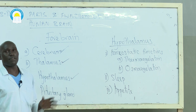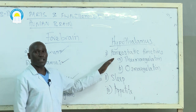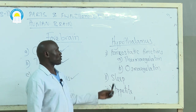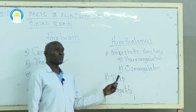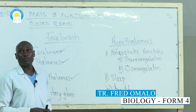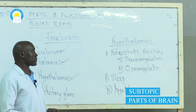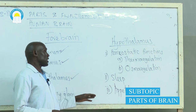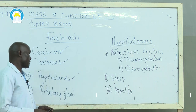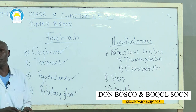So the three main functions of hypothalamus are: homeostatic functions — thermoregulation (regulation of body temperature) and osmoregulation (regulation of water and mineral ions within the blood); controlling sleep and wakefulness; and controlling appetite.